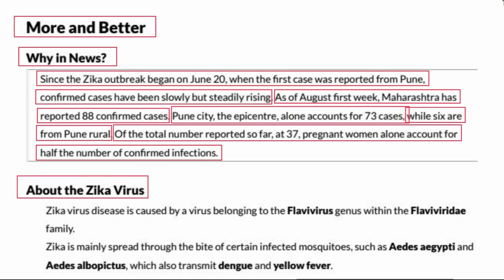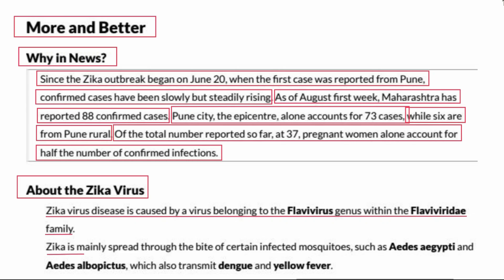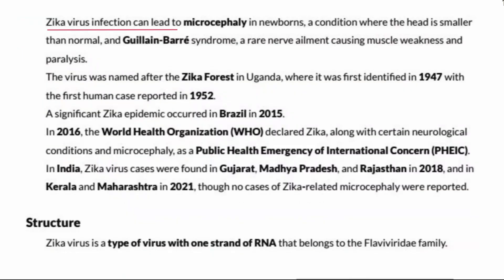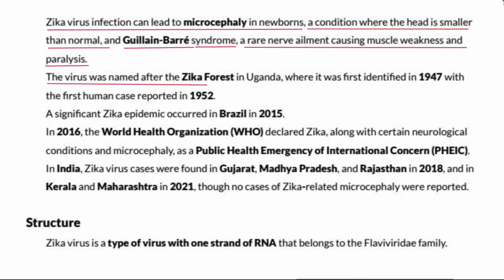About the Zika virus: Zika virus disease is caused by a virus belonging to the Flavivirus genus within the Flaviviridae family. Zika is mainly spread through the bite of certain infected mosquitoes such as Aedes aegypti and Aedes albopictus, which also transmit dengue and yellow fever. Zika virus infection can lead to microcephaly in newborns, a condition where the head is smaller than normal, and Guillain-Barré syndrome, a rare nerve disorder causing muscle weakness and paralysis. The virus was named after the Zika forest in Uganda, where it was first identified in 1947, with the first human case reported in 1952.